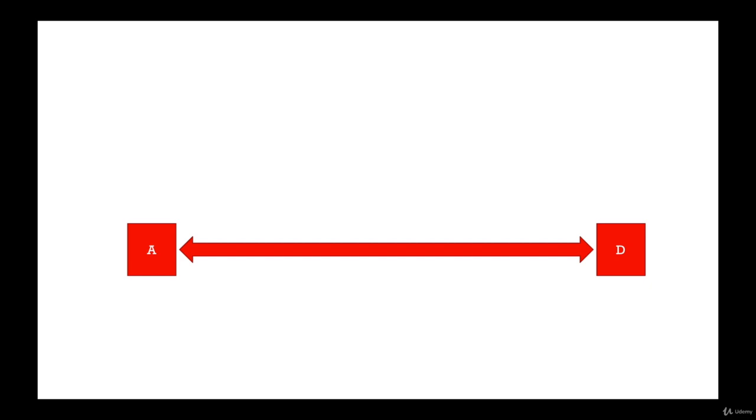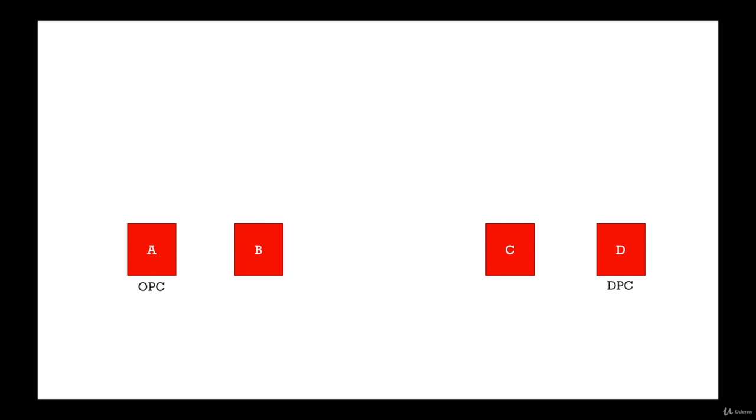Here A and D are both connected via a signaling link which is directly connected. This kind of mode of communication is called associated mode. However, that's not a practical scenario for all the nodes across the SS7 network, because it would be a huge combination if you tried to connect each signaling point to every other signaling point in the network. Instead, we connect two endpoints via a set of routers.